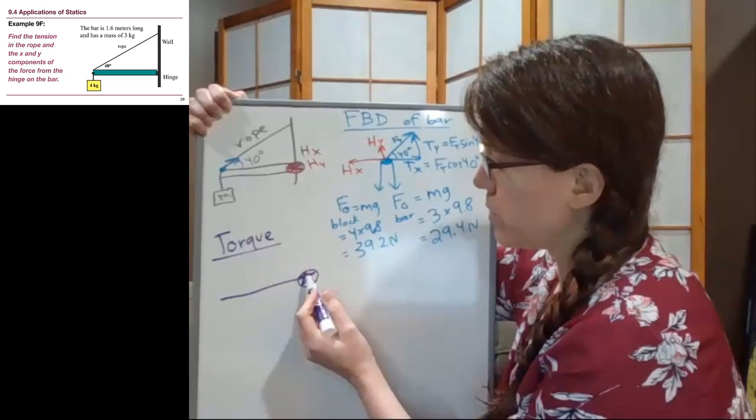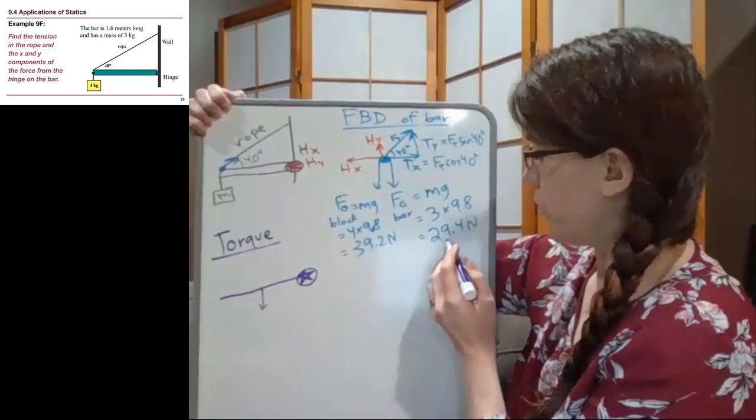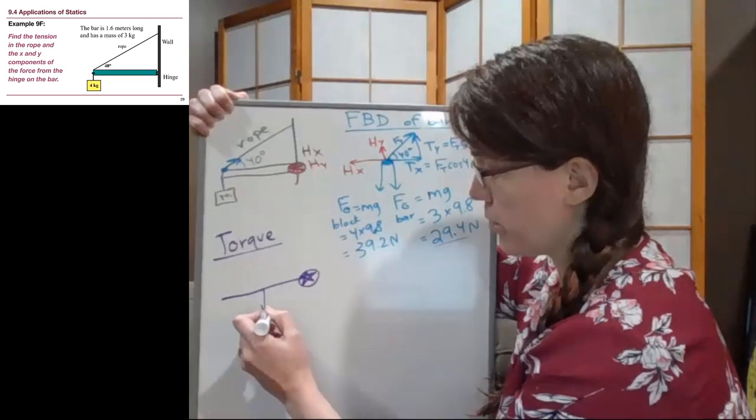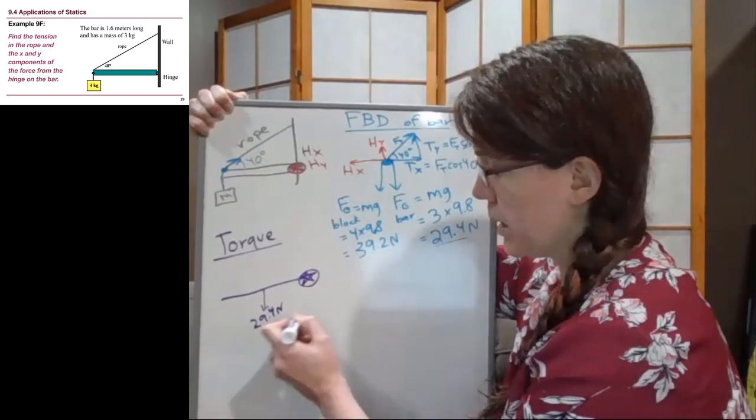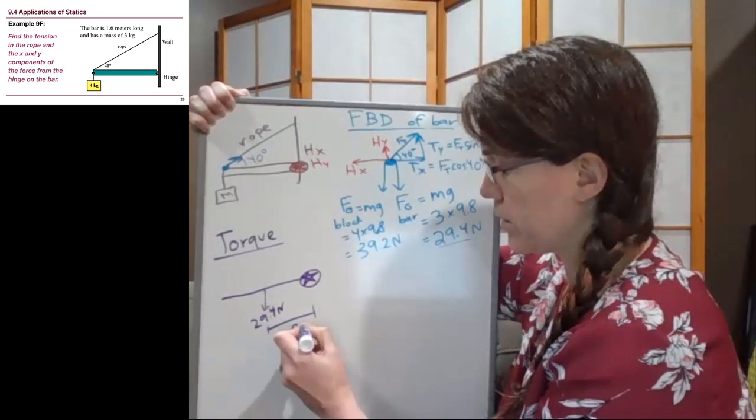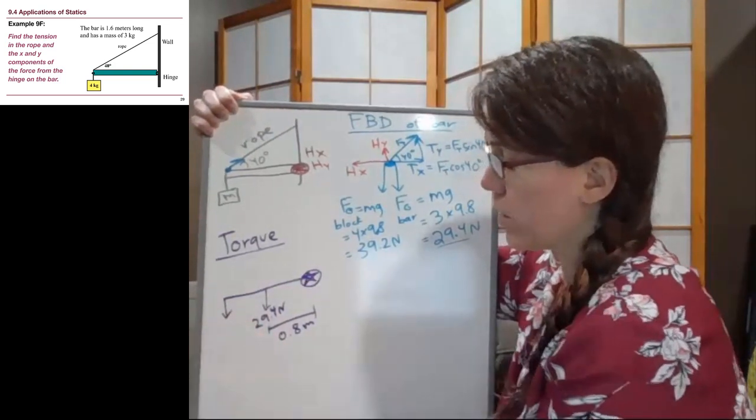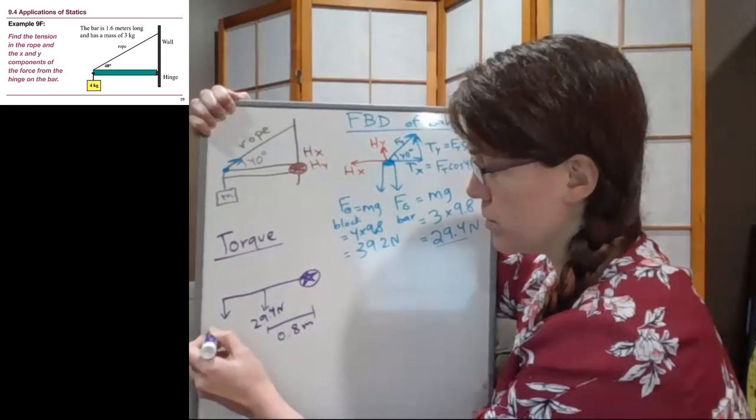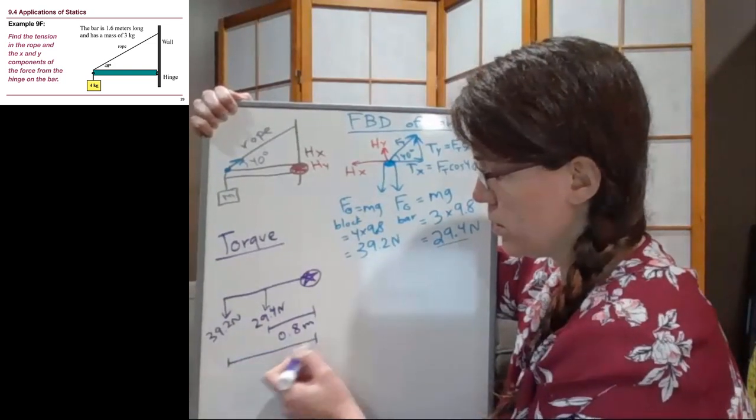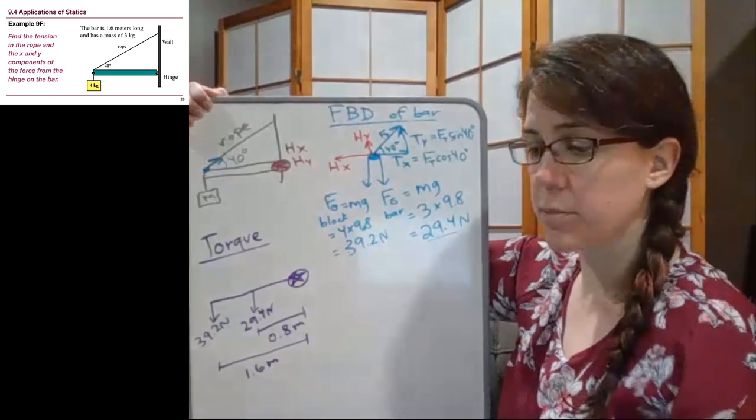And so now we put in our forces. If we start here and we go out halfway along the bar, we will get to the force of gravity for the bar itself, 29.4 Newtons. And halfway along the 1.6 meter long bar would be 0.8 meters. At the very end of the bar, that is where we have our 39.2 Newton force. And that distance is a full 1.6 meters away.